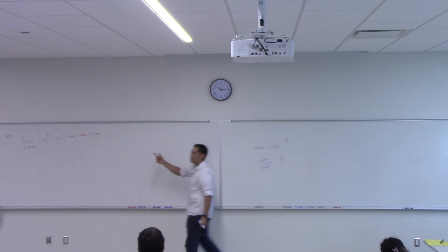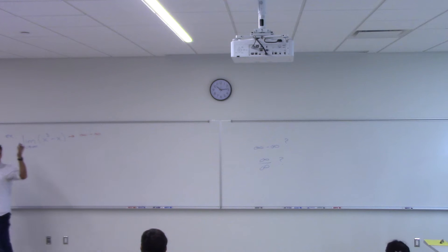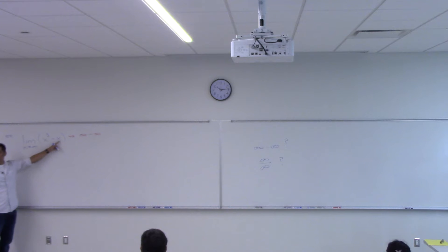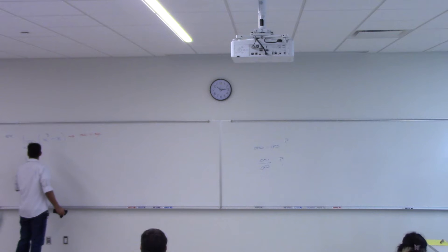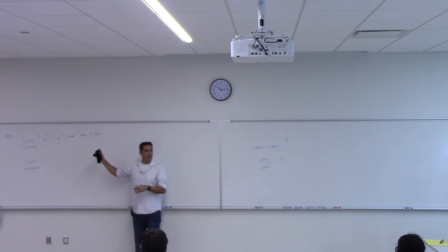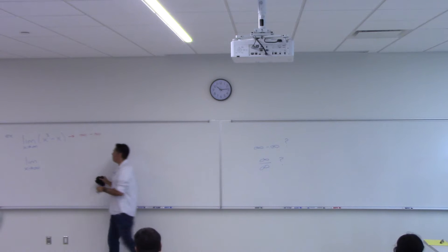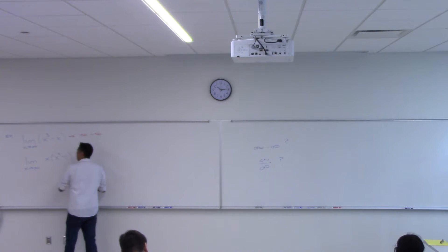So who wins? Who do you think wins this? X cubed, right? The higher power wins, right? This thing gets bigger faster than this one, but let's show it algebraically. It's a pretty simple thing to show. All I'm going to do here is factor — I'm going to factor an X out, right? They both have an X. So if I pull an X out, I'm left with X squared minus 1.